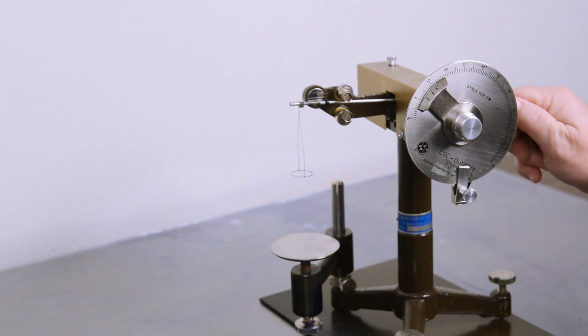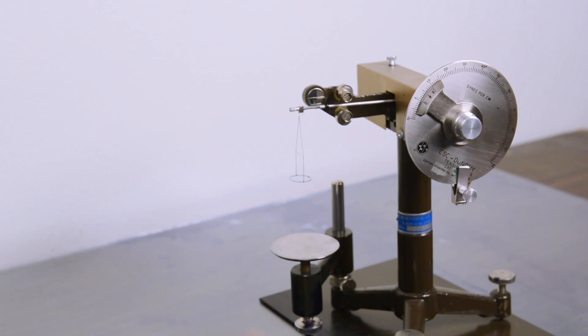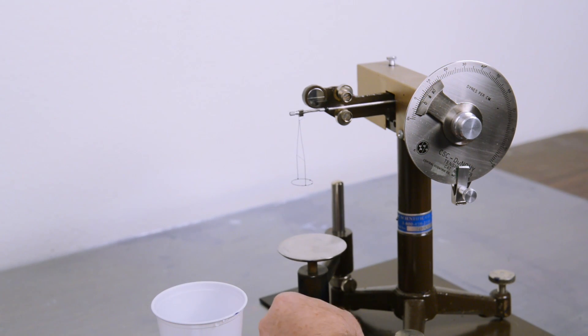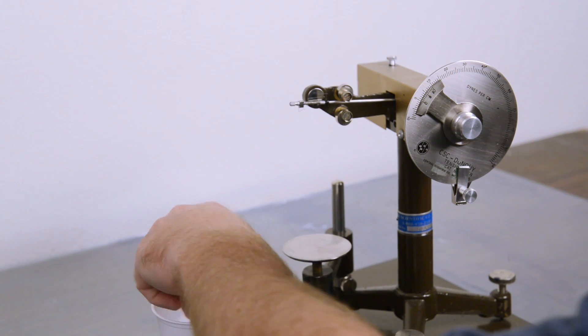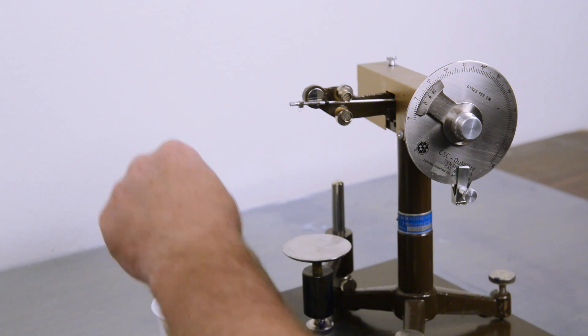We are going to zero out the dial, so zero, zero. Our arm lever is all the way up, and we need to clean the denoy ring.